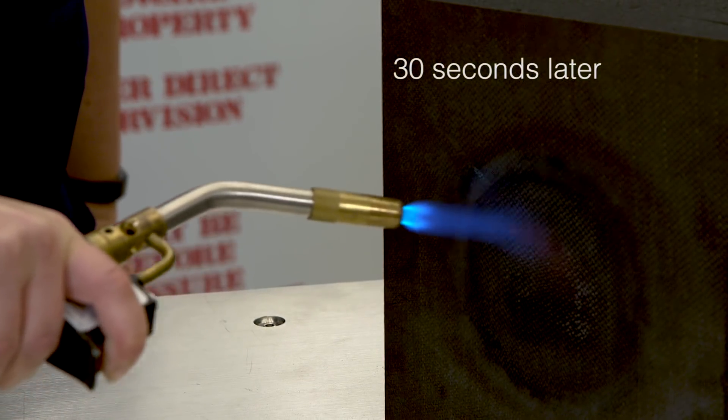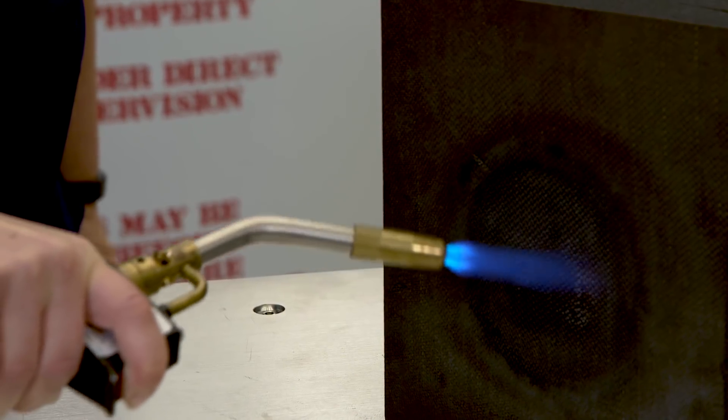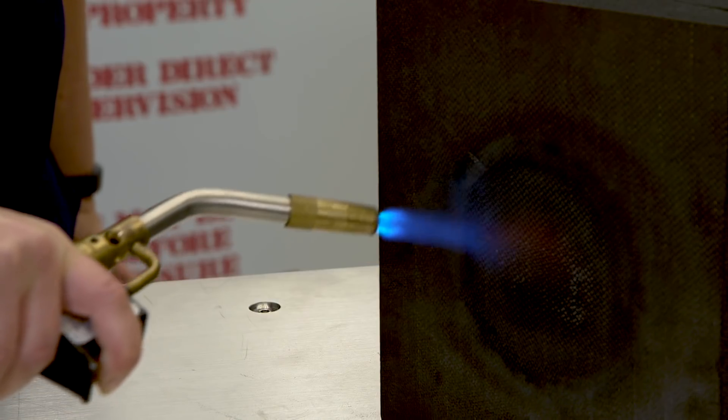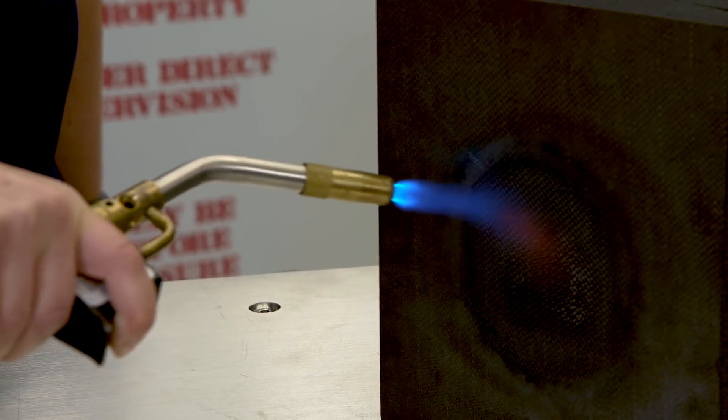You can start seeing it glowing red. The real heat shield gets up to about 2500 degrees Fahrenheit, which we're not going to do today, but we are going to get it to a couple hundred degrees Fahrenheit.